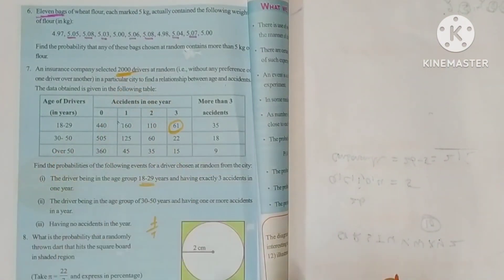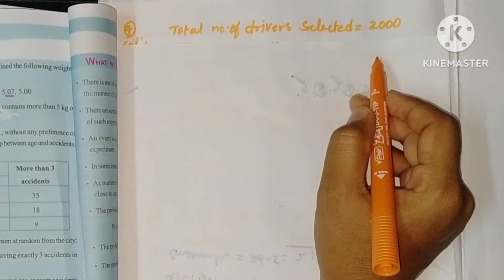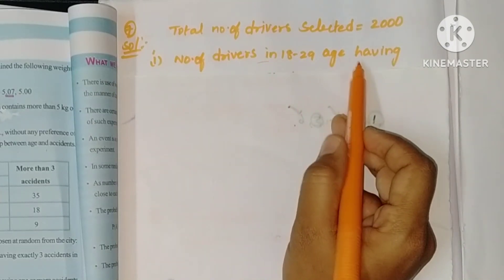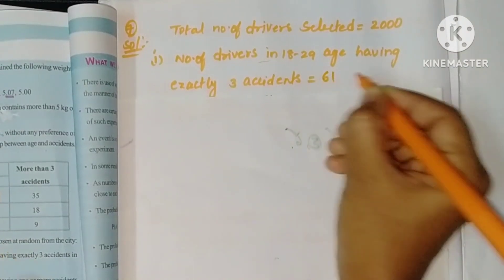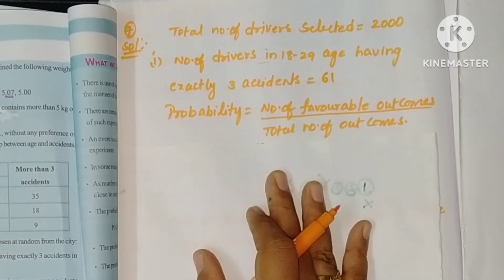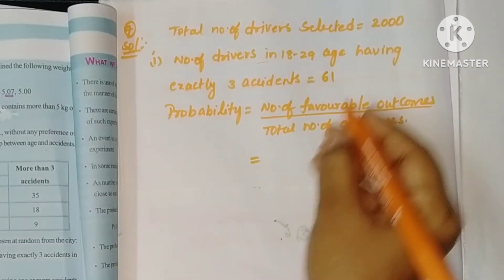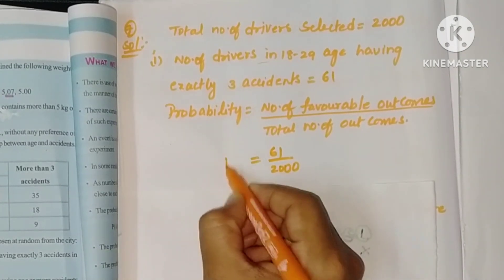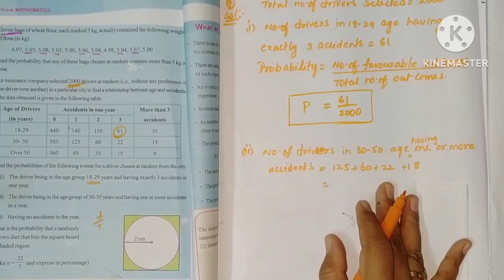Let me write the steps. First, total number of drivers selected is 2000. Next, first one: Number of drivers in 18 to 29 age having exactly 3 accidents, how many? 61. So let me write the probability formula: probability equals number of favorable outcomes by total number of outcomes. So here favorable is 61, total is 2000. So probability is 61 by 2000.